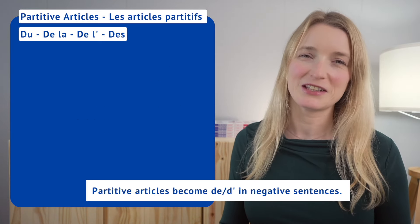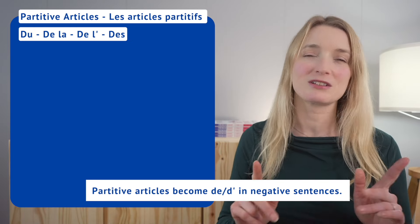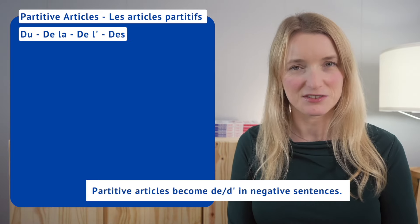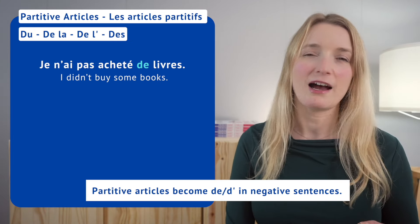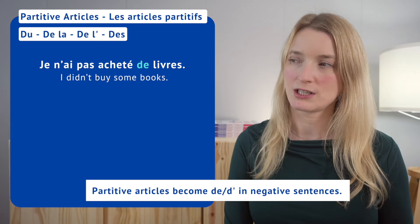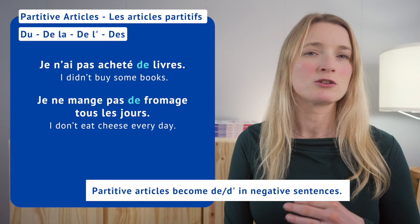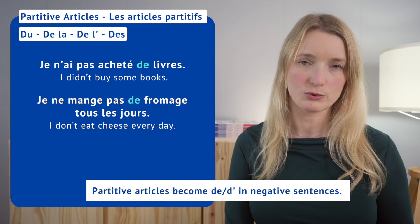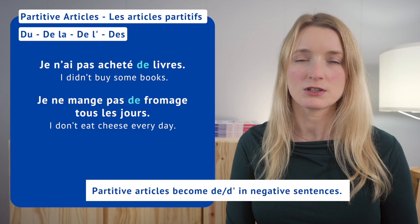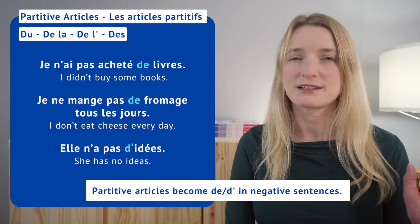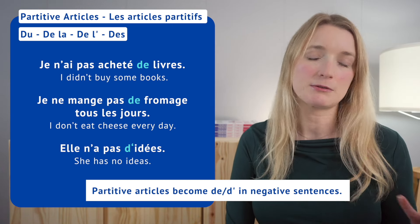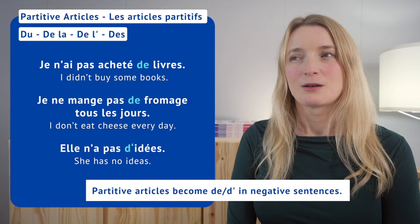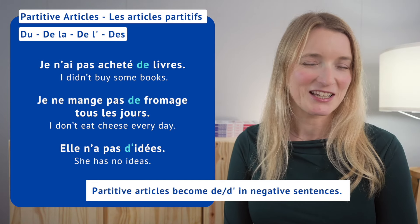Quick note before we end: partitive articles become de or d'apostrophe in negative sentences. For example: je n'ai pas acheté de livres, je ne mange pas de fromage tous les jours, elle n'a pas d'idées. This is a very common mistake that French learners make, so I wanted to point that out. And that was the last point of this lesson.